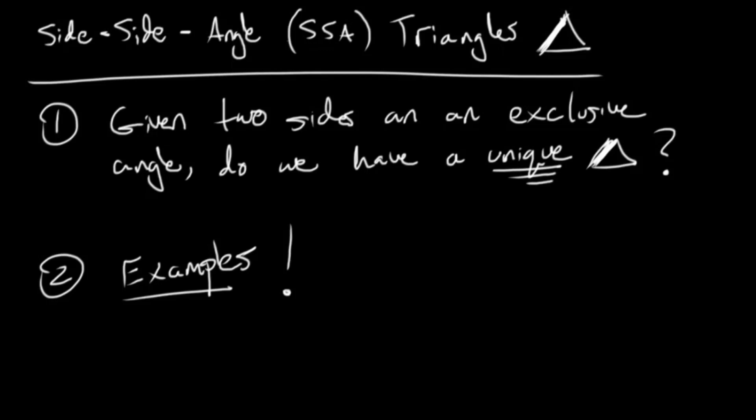In this video we are going to look at the side-side-angle triangle. Last year in geometry, you looked at the side-angle-side, side-side-side, and all the different patterns that guarantee a unique triangle. In this video, we're going to look at side-side-angle — when you're given two sides and an exclusive angle, the angle not between the two sides that you were given.